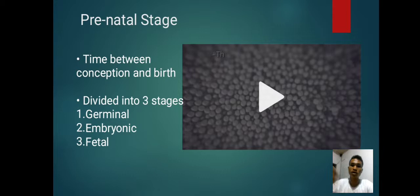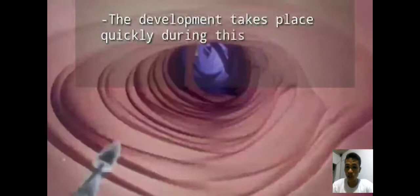First is the prenatal stage, the time between conception and birth. Development takes place quickly during this stage; it involves tremendous growth. The prenatal stage is divided into 3 stages called gestation. First is the germinal stage — two weeks after conception, when a sperm cell meets an egg cell it will form a zygote. The zygote will divide, and a group of cells move along the fallopian tube of the mother to the uterus. This process is called implantation.